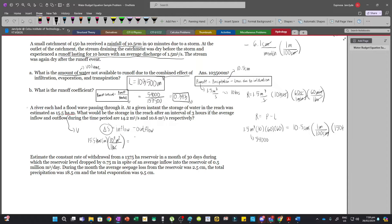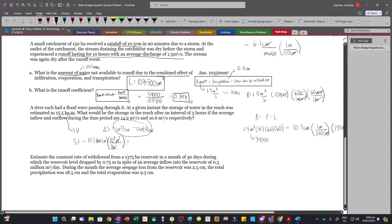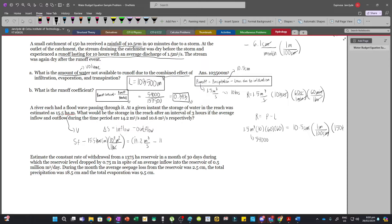And so since delta s is the change in storage, we have the final storage which is s_f minus the initial storage and then here we have inflow minus outflow. So that'll be 14.2 meter cubed per second minus 10.6 meter cubed per second. However, we need to convert seconds into hours.